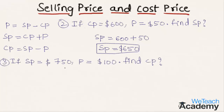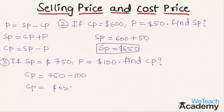Let us solve one more example. If selling price is $750 and profit is $100, we have to find the cost price. By substituting in the formula — Cost Price = Selling Price minus Profit — we get $750 minus $100. By subtracting, we get the cost price as $650.